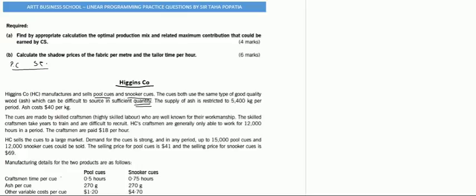The supply of ash is restricted to 5,400 kgs per period. Ash costs $40 per kg. So the first thing to note is that ash has a limited quantity of 5,400 kgs. To remind you, we apply linear programming when there are more than one limiting factor.